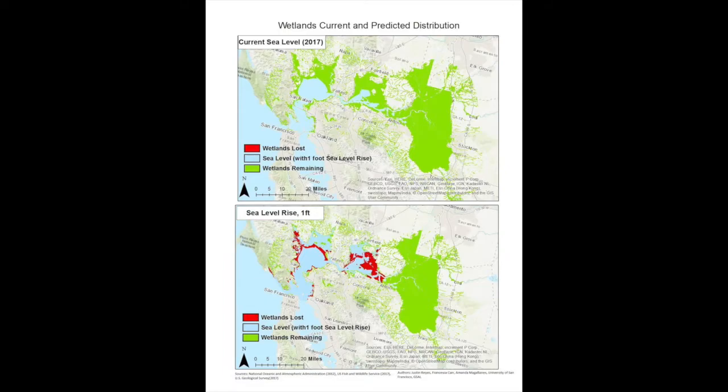After applying one foot of sea level rise to our analysis, we found that a small number of wetlands will be fully inundated and lost, resulting in fewer habitats and food resources for Delta smelt. The majority of wetlands surrounding San Pablo Bay and Suisun Bay will be inundated, which may decrease the distribution range of Delta smelt in the future. Most wetlands located in the Delta confluence and in the Sacramento and San Joaquin rivers will remain and can be beneficial for Delta smelt, signifying that Delta smelt may be restricted to inhabiting the Delta east of Suisun Bay.